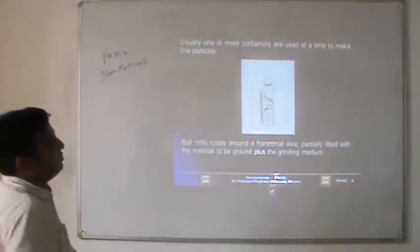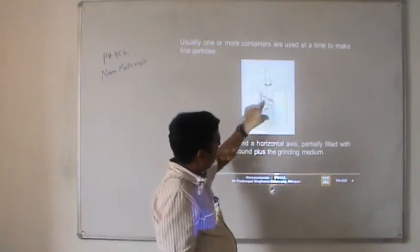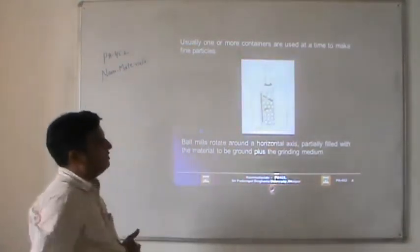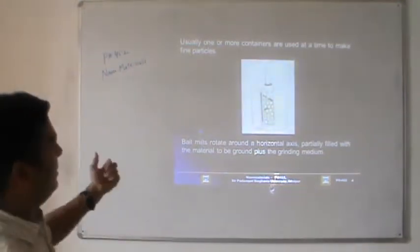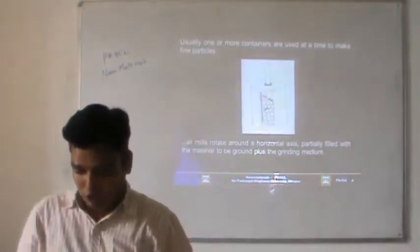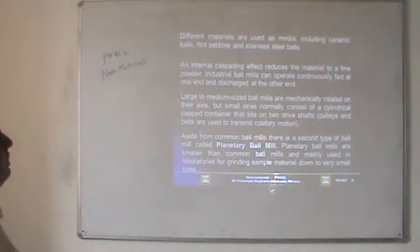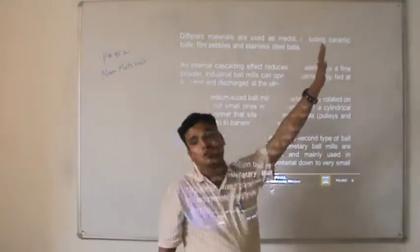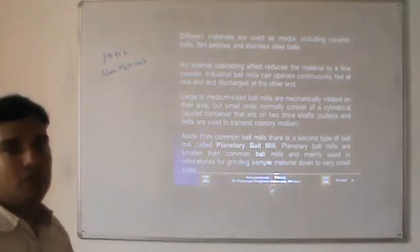Usually, one or more containers are used at a time to make fine particles. We have a cylindrical container and balls; between the balls we place the powdered sample. When these balls rotate at very high speed around the horizontal axis, the particles filled with material produce nanosize samples. The duration of ball milling, the size of balls, and the ratio of balls to particles are the important parameters. Different metals used as media include ceramic balls, flint pebbles, stainless steel balls, and carbide or tungsten balls.